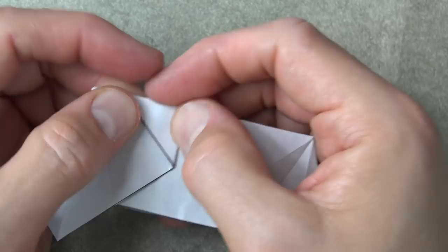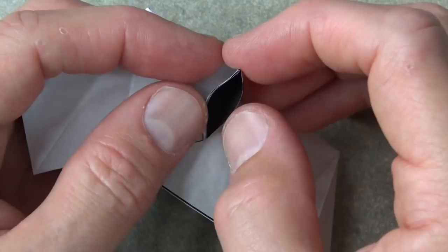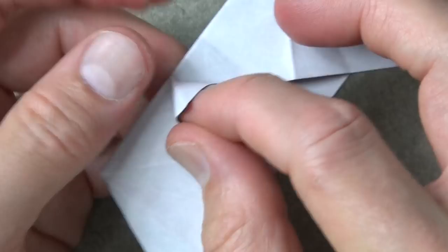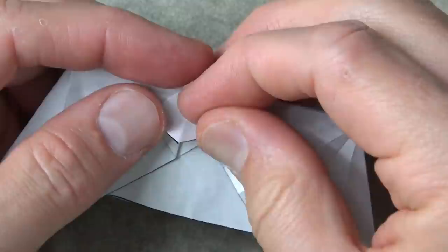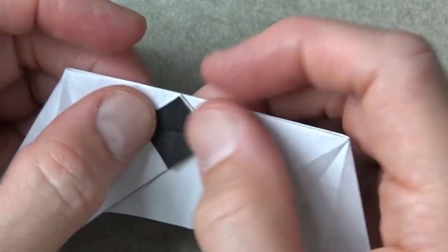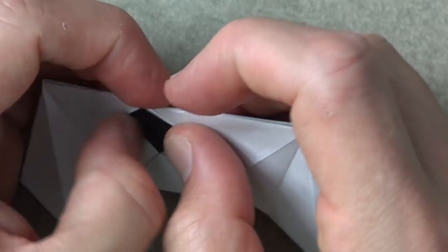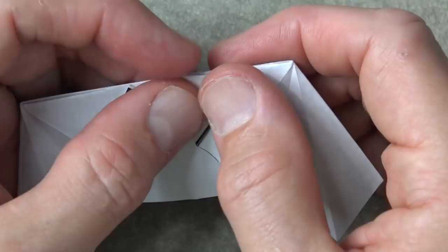And now open the white pocket and squash so that it's square. Lift the front flap, just the single layer, and fold it up. And repeat on this flap. White pocket, squash.